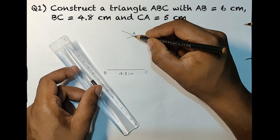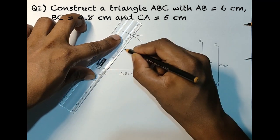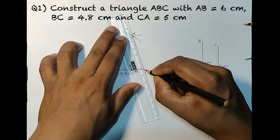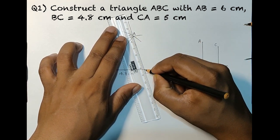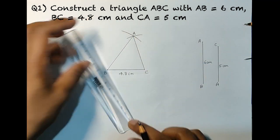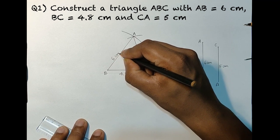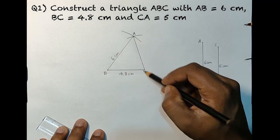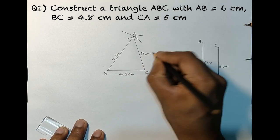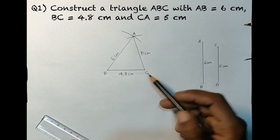Now using the ruler and pencil, align the two points A and B to get side AB, and using points C and A to get side AC. Let's join them. Now write down AB is 6 centimeters and CA is 5 centimeters. So here your triangle ABC with sides 6 centimeters, 4.8 centimeters, and 5 centimeters is ready.